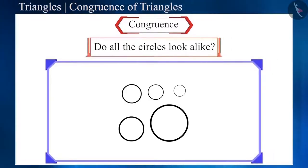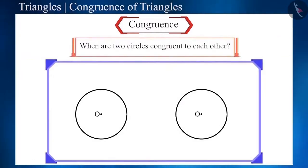Do all circles look alike? All the circles appear to be round, but the only difference is that they can be bigger or smaller than each other. Can you tell when are two circles same or, let's say, congruent to each other?